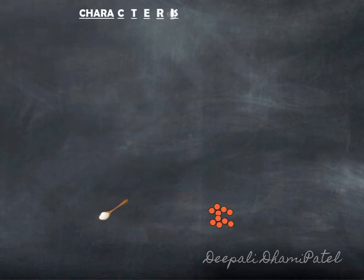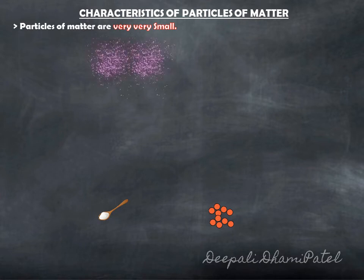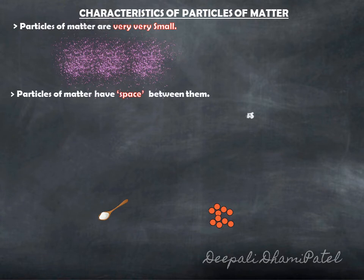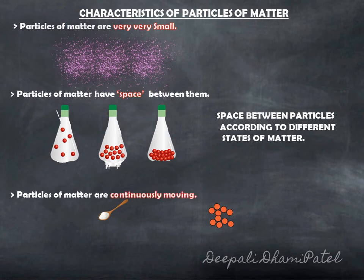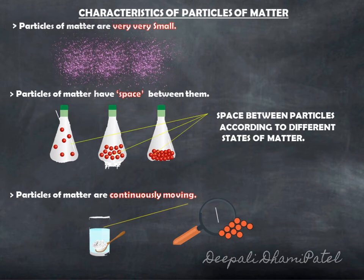The characteristics of these particles: Particles of matter are very very small which can be seen only under high definition microscopes. Particles of matter have space between them, and the space between them will be defined on the basis of states of matter. Particles of matter are continuously moving. Particles of matter attract each other.